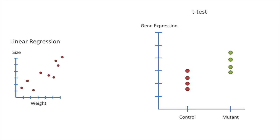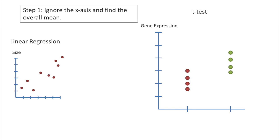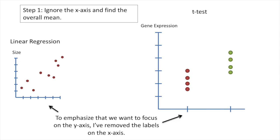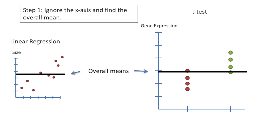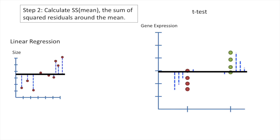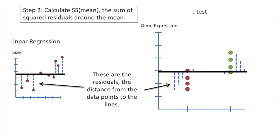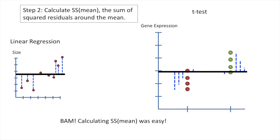I'm going to walk you through the steps for using the techniques from linear regression to do a t-test. On the left side of the screen I'll remind you how each step applies to linear regression, and on the right side I'll show you how those steps apply to t-tests. Step 1: ignore the x-axis and find the overall mean. To emphasize that we want to focus on the y-axis, I've removed the labels on the x-axis. Here are the overall means for the linear regression and the t-test. The next step is to calculate the sum of squared residuals around the mean — this is SS_mean. These are the residuals, the distance from the data points to the lines, which in this case are the overall means.